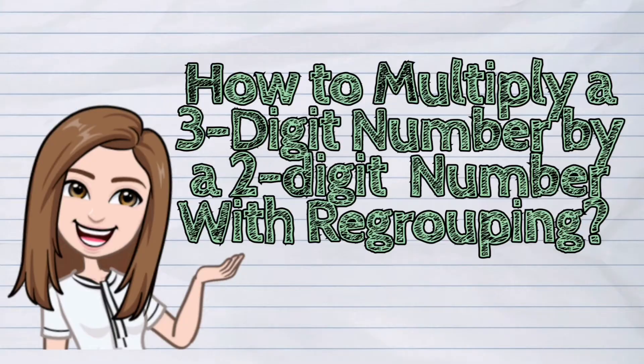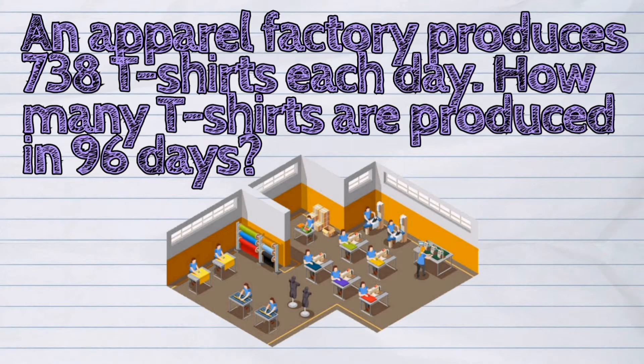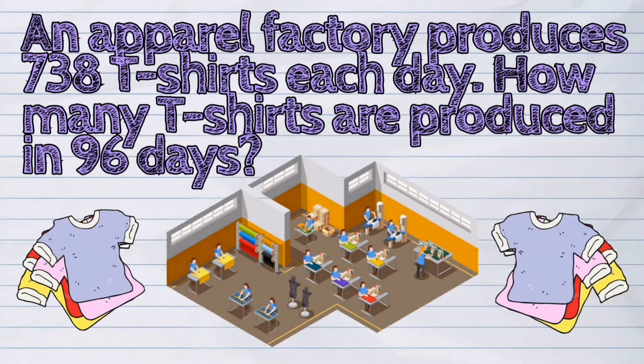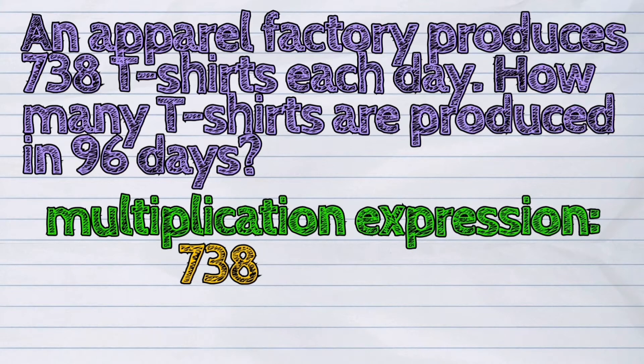Let us study this example. An apparel factory produces 738 t-shirts each day. How many t-shirts are produced in 96 days? Our multiplication expression is 738 t-shirts times 96 days.